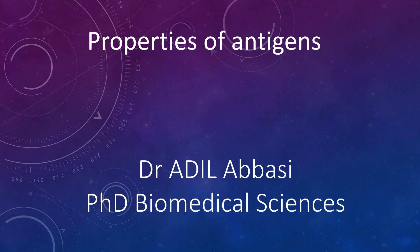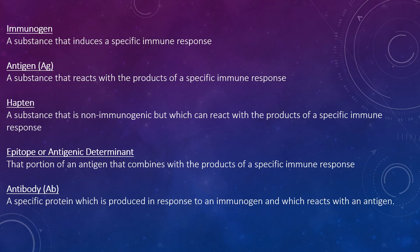Today we are looking at properties of antigens. Starting with definitions: an immunogen is a substance that induces a specific immune response, and an antigen is a substance that reacts with the products of a specific immune response.